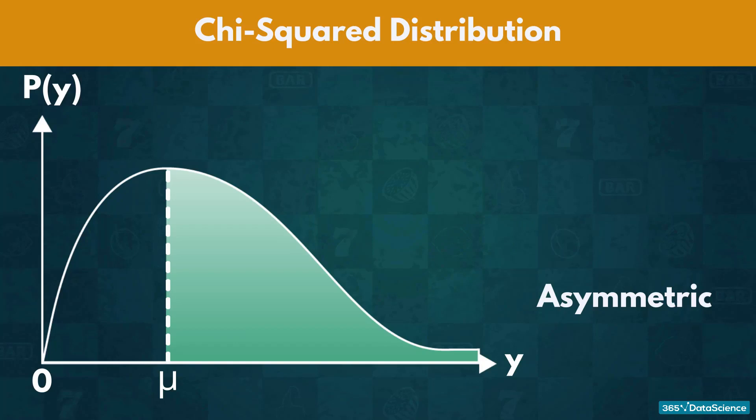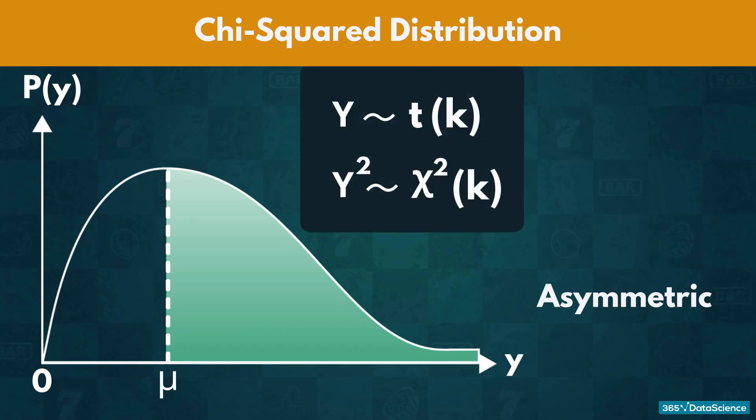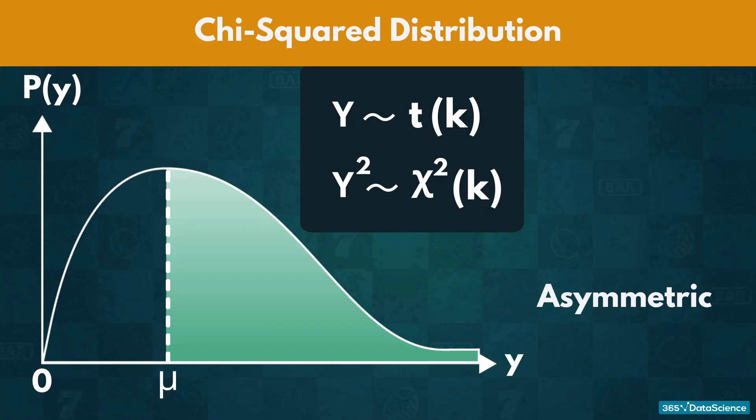This, by the way, shows you yet another transformation. Elevating the student's T distribution to the second power gives us the Chi-Squared, and vice versa. Finding the square root of the Chi-Squared distribution gives us the student's T.